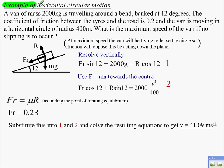Nice example here of horizontal circular motion on a banked surface. A van of mass 2000 kg is travelling around a bend, banked at 12 degrees. The coefficient of friction between the tyres and the road is μ equals 0.2, and the van is moving in a horizontal circle of radius 400 m. What is the maximum speed of the van if no slipping is to occur? At maximum speed the van will be trying to leave the circle so friction will oppose this in the plane. So, as it's looking towards a maximum, friction will act down because it's going faster and faster. The faster it goes, the more it's trying to leave the circle in that direction. So, friction will act down the surface to oppose the motion.